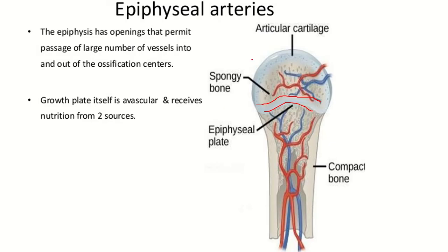The epiphyseal artery and the metaphyseal artery both provide nutritional supply to the epiphyseal cartilage or growth plate. Cartilage is avascular, but it receives nutrition by the process of diffusion from nearby sources.